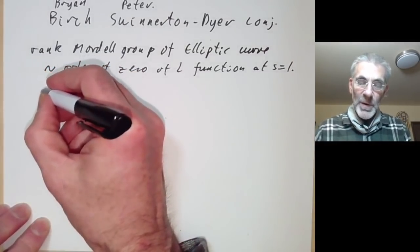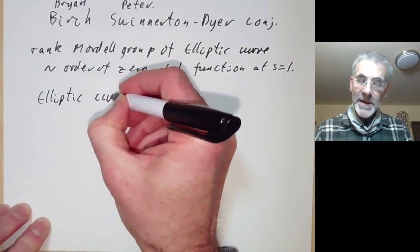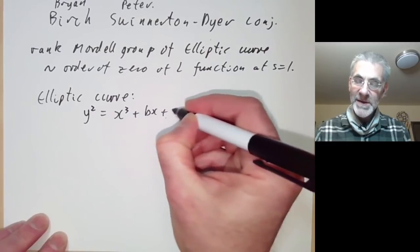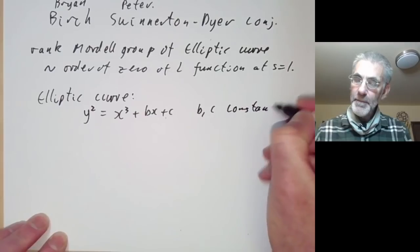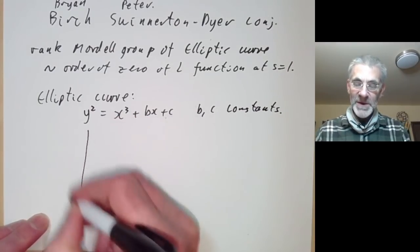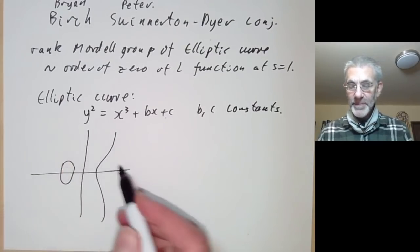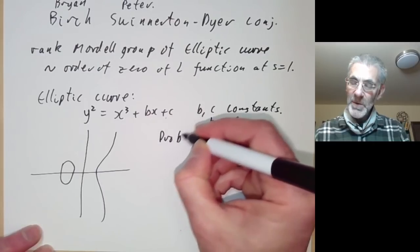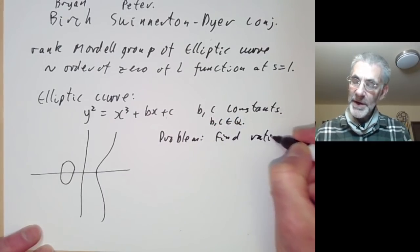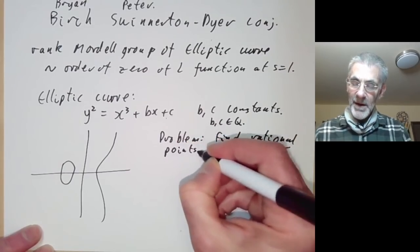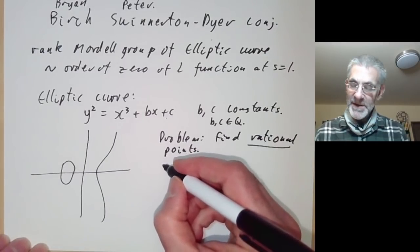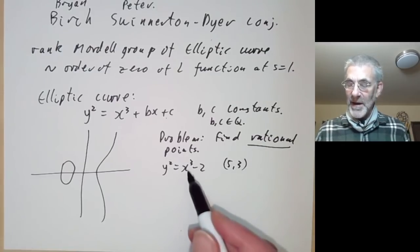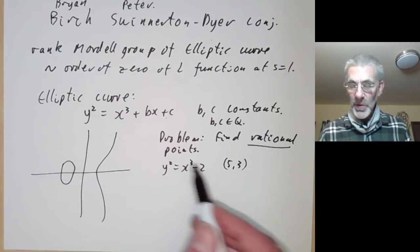An elliptic curve is roughly an equation of the form y² = x³ + bx + c, where b and c are fixed rational constants, giving a curve of that shape. The problem we want to solve is to find all rational points on it. A well-known historical example studied by Fermat is y² = x³ − 2. This obviously has one rational point (5, 3), for example, and it's really rather a difficult problem to figure out whether or not it has other rational points.